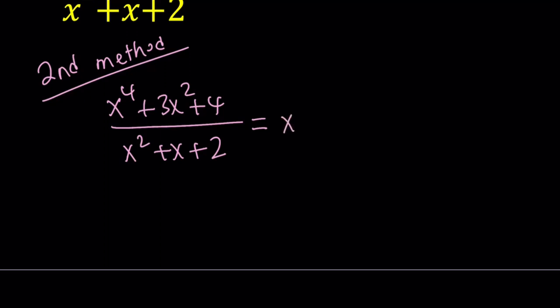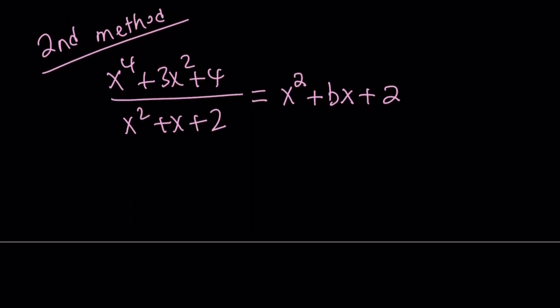So we expect to get something like x squared plus ax, bx, whatever you want to call that. There's an x term, and there's a constant. But if you look at the 4 and the 2, the constant has to be a 2, because 2 times 2 equals 4. You can only get a constant by multiplying constants if you're dealing with polynomials.